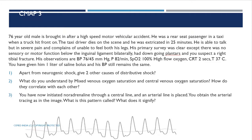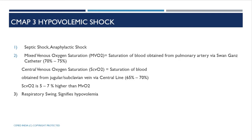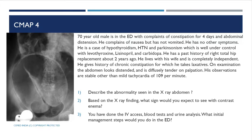With noradrenaline initiated through a central line and an arterial line in place, the image obtained shows a swinging pattern, which signifies that the patient is hypovolemic.